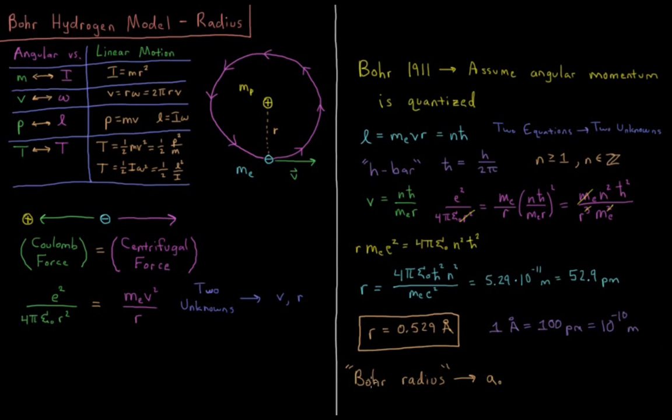This Bohr radius is also sometimes used as the unit of distance on atomic length scales as well. Sometimes you need to pay attention to whether we're discussing things in angstroms or in Bohr. But this Bohr radius is definitely a very important result that Bohr had this quantization hypothesis for angular momentum in a hydrogen atom, and it leads to a definite value for what the ground state radius of this hydrogen atom is.